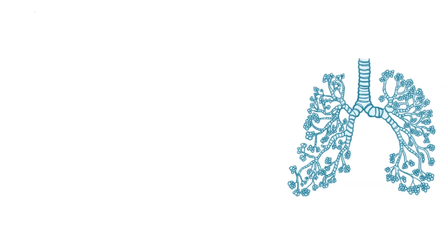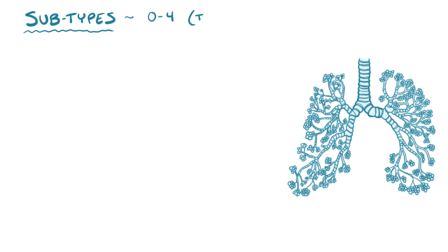CPAMs can arise from different spots along the tracheobronchial tree, and that's how they're subtyped. The five subtypes are named 0 through 4, with type 0 coming from the most proximal airways — the trachea and proximal bronchioles — and type 4 developing all the way down in the alveolus.